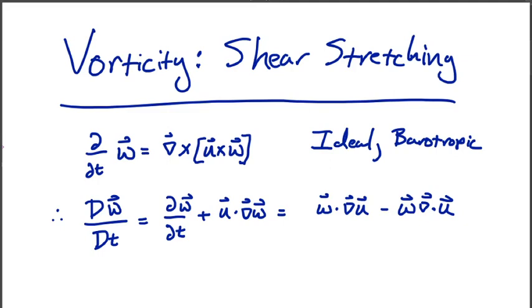And for a fluid that's ideal and barotropic, then the vorticity, the time evolution of vorticity, is given by the curl of u cross omega. This is our vorticity evolution equation.